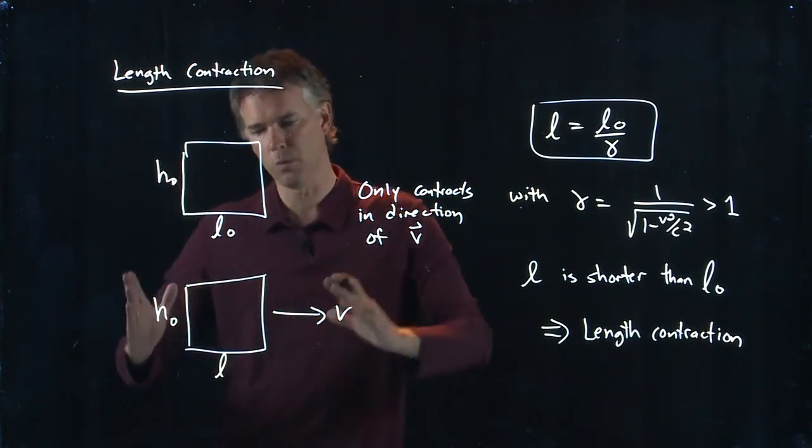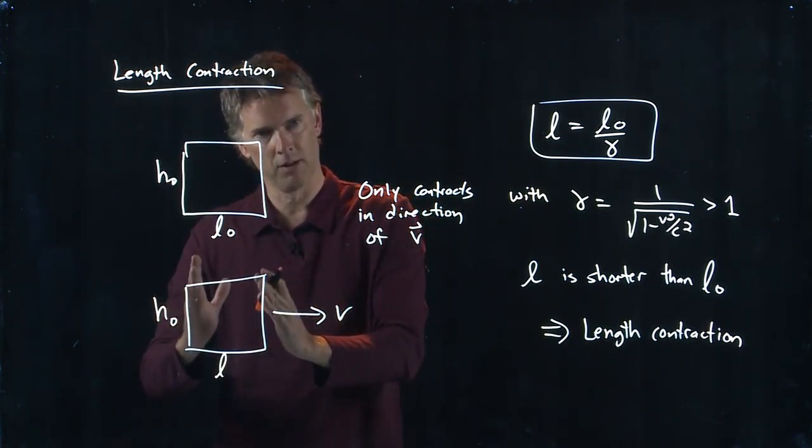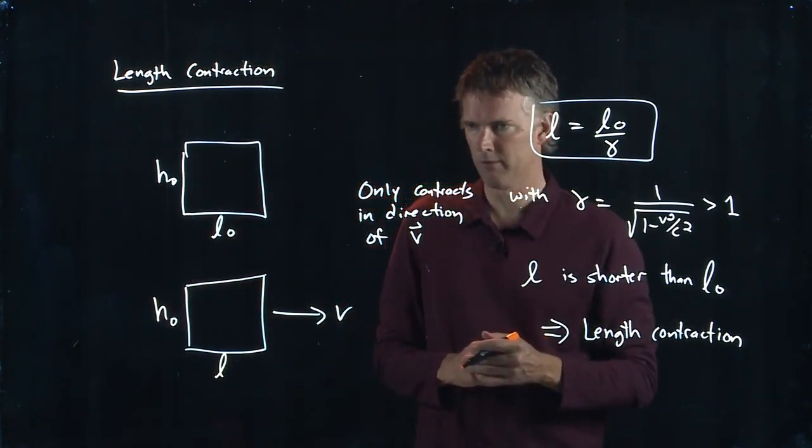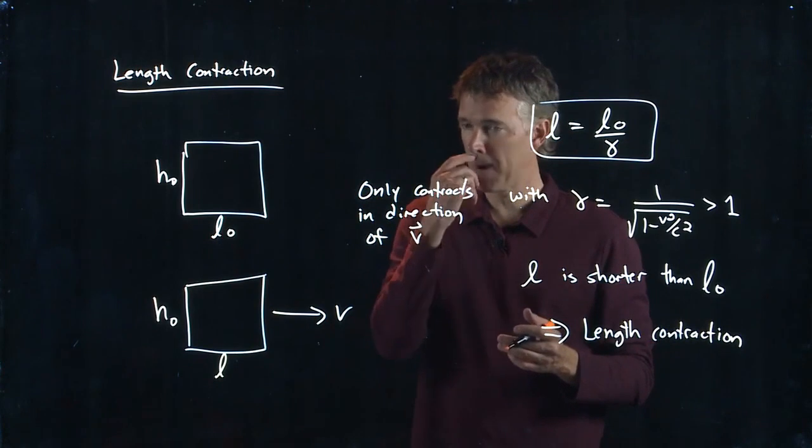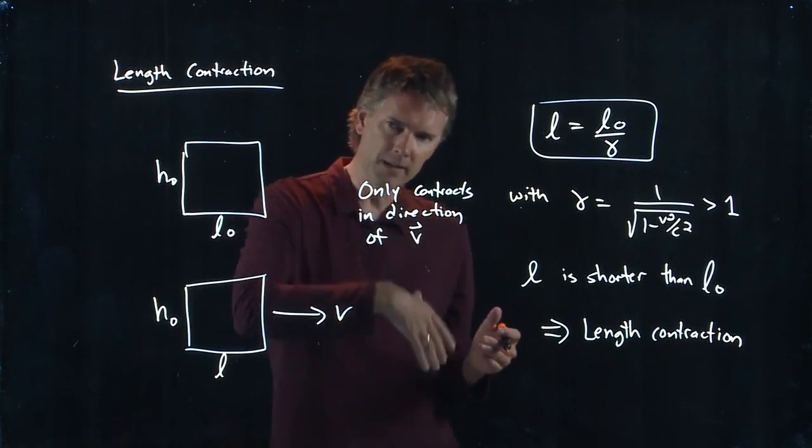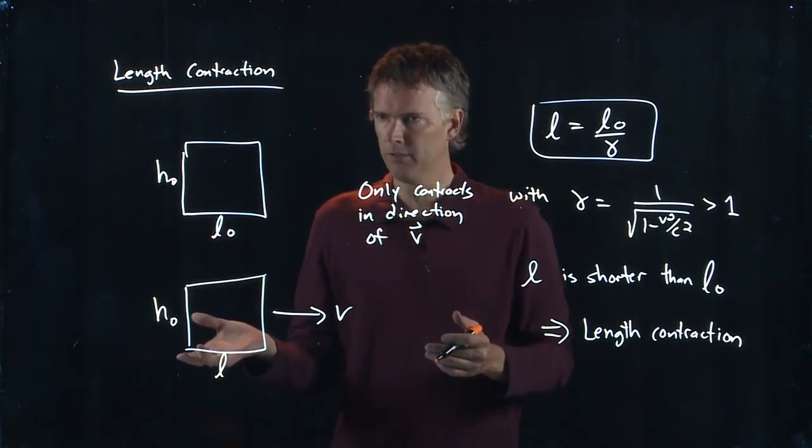A chunk of charge will compress in the longitudinal direction, in the direction of V. This has very strange implications. E-fields can transform into B-fields, and B-fields can transform into E-fields.